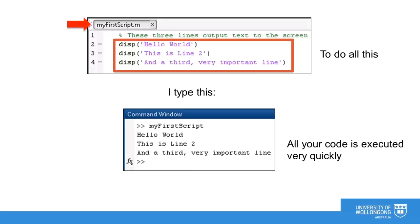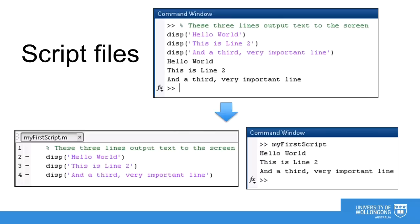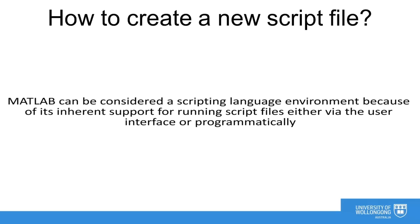A script file can also be called a macro or batch file because the commands are executed as a batch. Script files in MATLAB are stored with the .m file extension. MATLAB can be considered a scripting language environment because of its inherent support for running script files either via the user interface or programmatically, that is, by calling the file name from within the command window.